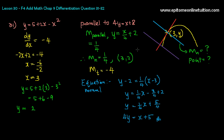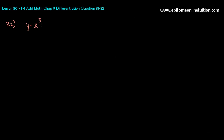So this is number 31. Let's have a look at number 32. Find the normal to the curve y is equal to x cubed minus 2x squared plus 7 at the point P. So it's given to you a point P, and the normal passes through another point K and 2K.